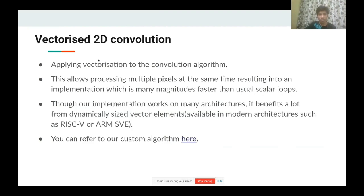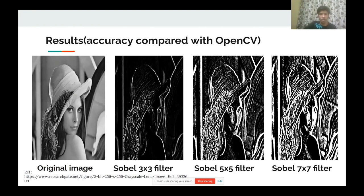We are applying vectorization to a 2D convolution algorithm. Since vectorization is applied, we are able to process multiple pixels at the same time, resulting in an implementation many magnitudes faster than usual scalar approaches. Though our implementation works on many architectures, it benefits greatly from dynamically sized vector elements, available in modern architectures such as RISC-V and RISC-V.